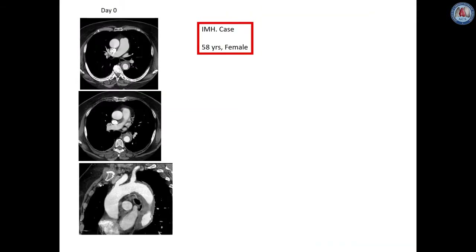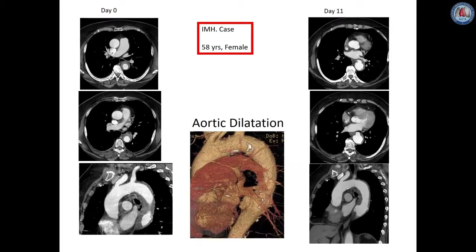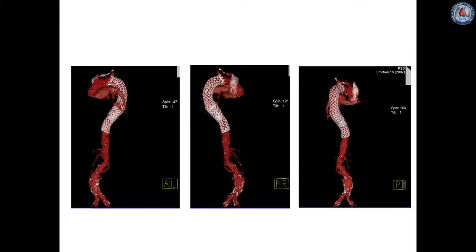This is a 58-year-old female patient we observed with a descending intramural hematoma. On day 11, she developed a PAU ulcer-like imaging within the hematoma of the descending aorta, and pain was recurrent and refractory to therapy. CT scans showed the presence of aortic dilatation, so the patient needed to be treated in the short term. She was submitted to TEVAR with resolution of the imaging as well as the clinical condition.